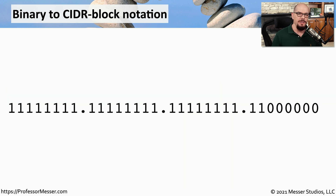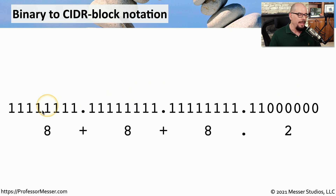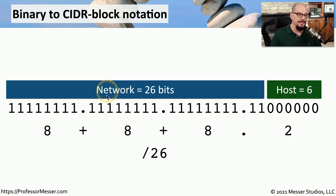Let's do another CIDR block notation calculation, this time with a subnet mask that doesn't follow those 8-bit octet boundaries. In this example, we have a subnet mask that has all 1s in the first three octets, but the last octet has 1, 1, and then six 0s. It's the same calculation — we count up the number of 1s, which is 8 plus 8 plus 8 plus 2, giving a total of 26. So the CIDR block notation for this subnet mask is a slash 26, meaning the network portion is 26 bits long and the host portion is 6 bits long.